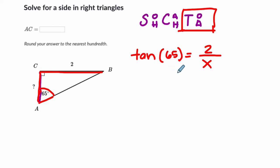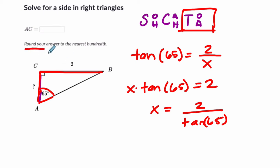Probably the easiest way to do this is to multiply both sides by X. So I would get X times the tangent of 65. And on the right-hand side, 2 divided by X times X, just 2. And then I'm going to divide both sides by the tangent of 65. So X equals 2 divided by the tangent of 65.